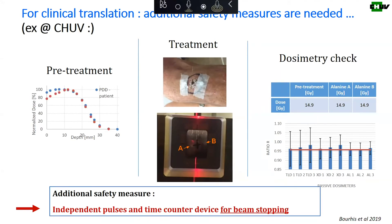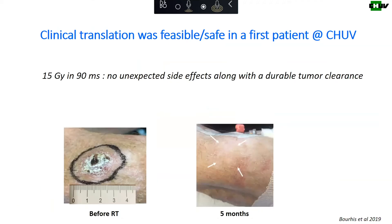For clinical translation, there may be additional safety measures needed, because it goes so fast that you want to stop the beam exactly after the number of pulses you need. In addition to a normal linac, we probably need an independent pulse and time counter device for beam stopping. We've used that in one patient so far — it proved feasible and safe, giving 15 gray in one fraction in 90 milliseconds. We didn't get any unexpected side effects and the tumor durably disappeared.